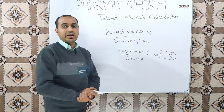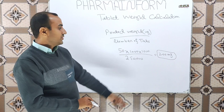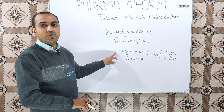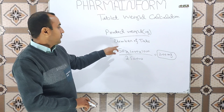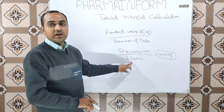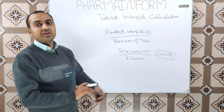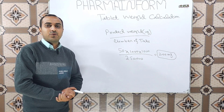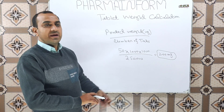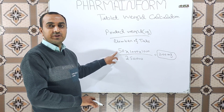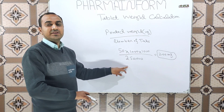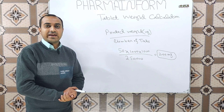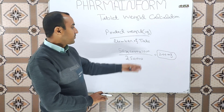When you calculate it, the answer will be 200 mg — meaning our individual tablet weight for compression will be 200 mg, given 50 kg of product and 250,000 tablets. Now if the batch size remains 50 kg but the number of tablets is 500,000, the answer will be 100 mg. You can easily calculate this.